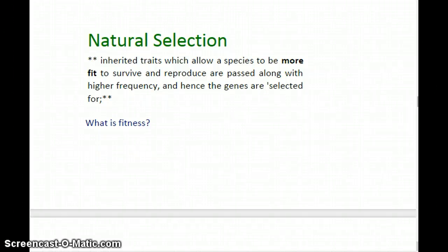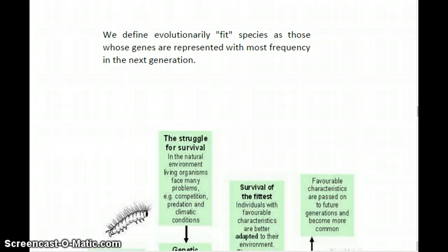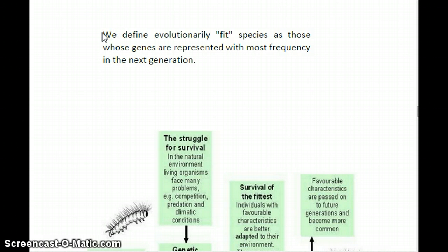So now let's look more closely at how natural selection occurs. With natural selection we're basically looking at how inherited traits which can allow a species to be more fit to survive in their environment and reproduce are the traits that are considered fittest. When we talk about fitness, what we're talking about in the biological sense is not necessarily physical fitness — working out at the gym, being fast or strong. Fitness in this sense basically means the capacity to pass on your genes to the next generation. An evolutionarily fit species are those whose genes are represented with the most frequency in the next generation.